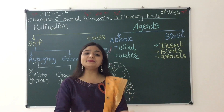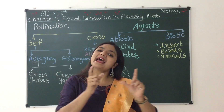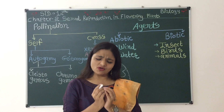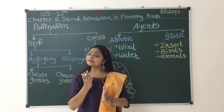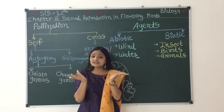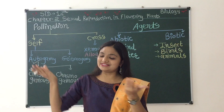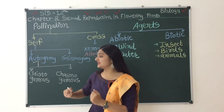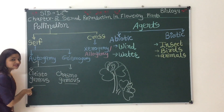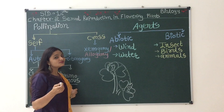For the autogamy process, there are two adaptations. It produces two types of flowers: cleistogamous flowers and chasmogamous flowers. Cleistogamous means flowers which do not open. Chasmogamous means flowers which remain open.